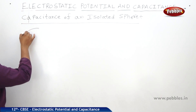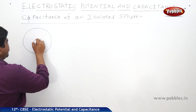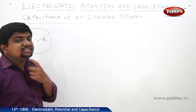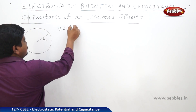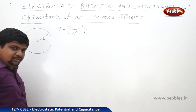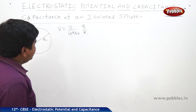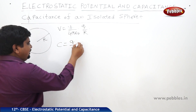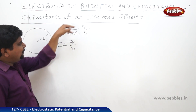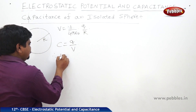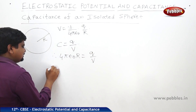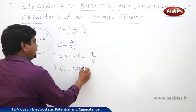Take a sphere of radius R. The potential due to this charged spherical shell is V = (1 / 4πε₀) × (q / R). The capacitance formula is C = q/v. Bringing v to the right-hand side, we get C = q/v = 4πε₀R. Therefore, the capacitance of an isolated sphere is C = 4πε₀R.